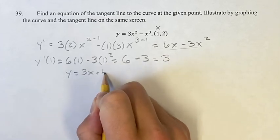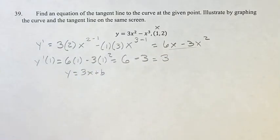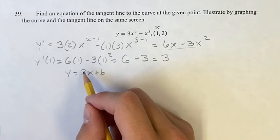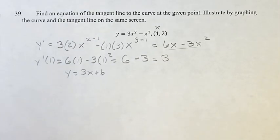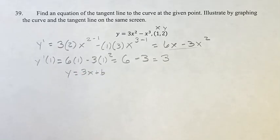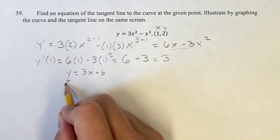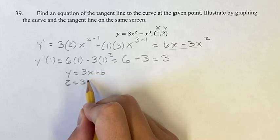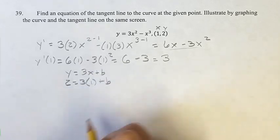Y equals 3x plus b, just for the equation of the line. Y equals mx plus b, plus b, plugging in 3 for m. And now since we know x and we know y, we can plug them in to this equation and solve for b. So doing that, y is 2, that's equal to 3x, which is 3 times 1, plus b.